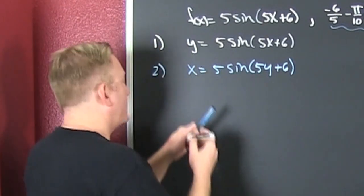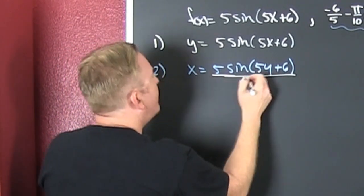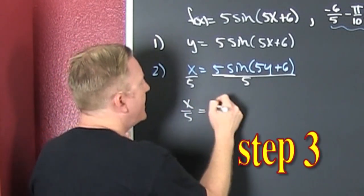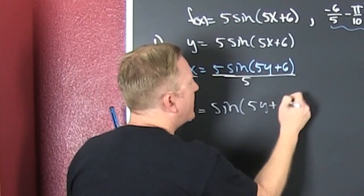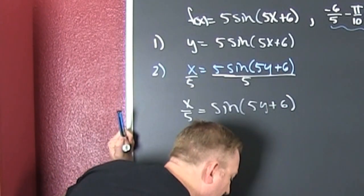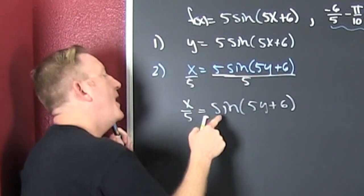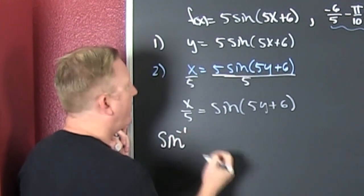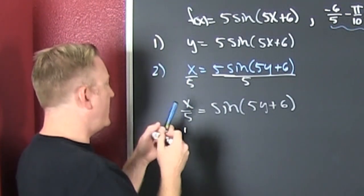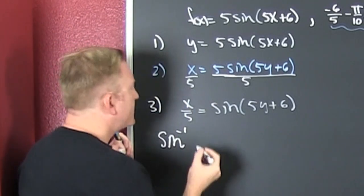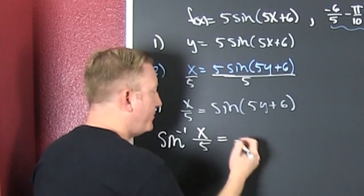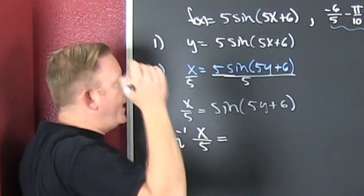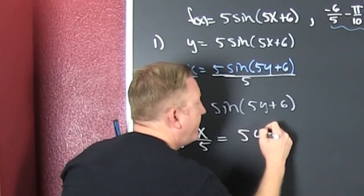Now we solve for y. I divide both sides by five. So then x over five is the sine of 5y plus 6. I'm trying to solve for y, so how do I get rid of that sine? I inverse sine both sides. Step three: the sine inverse of x over five — since sine inverse and sine are inverse operations, I get rid of the sine and that gives me 5y plus 6.